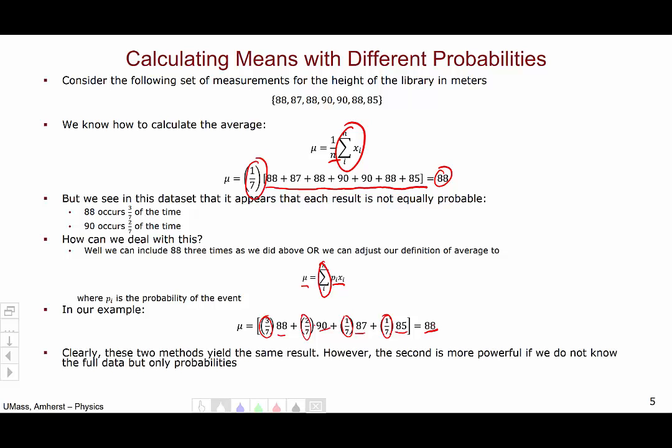So clearly, these two methods yield the same result. However, the second is more powerful if we don't know the full data, but say only know the probabilities of different outcomes.